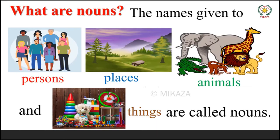The third slide shows what are nouns. The nouns are naming words. Anything on earth, anything here that you can see, are all nouns. Nouns are the names given to persons, places, animals, and things.